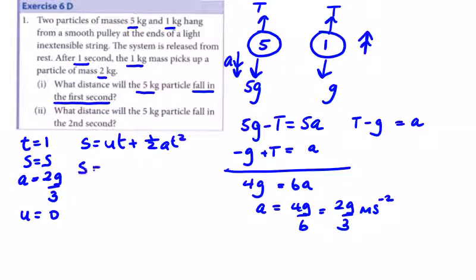This brings in the formula s equals ut plus half at squared. So the distance traveled is 0 times 1 plus half times 2g over 3 times 1 squared. Canceling your 2s, it's just going to be g over 3 meters.